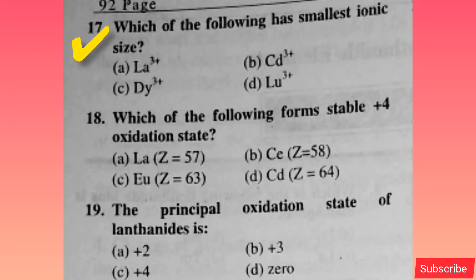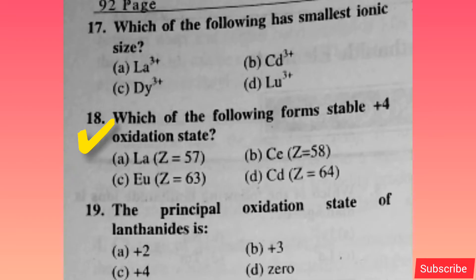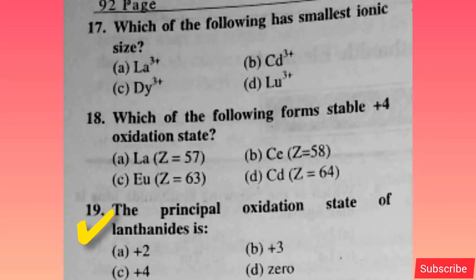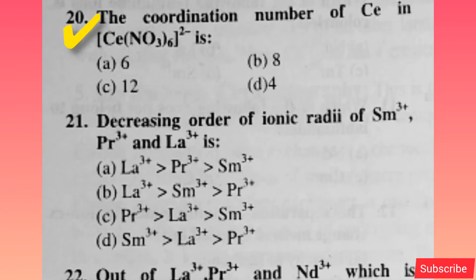Which of the following trivalent lanthanide ion is diamagnetic? Option A is correct. Which lanthanide has the configuration 4f7 5d1 6s2? Option B is correct. Which of the following has the smallest ionic size? Option D is correct. Which of the following forms a stable plus 4 oxidation state? Option B is correct.